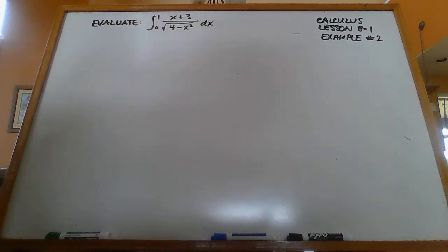Okay, here we got a problem. The integral from 0 to 1 of x plus 3 over the square root of 4 minus x squared dx. So this is going to use two different basic rules to solve this thing.